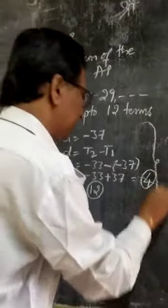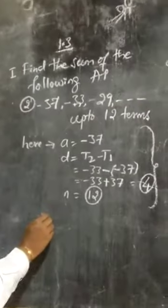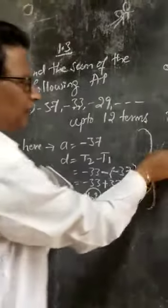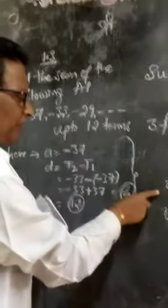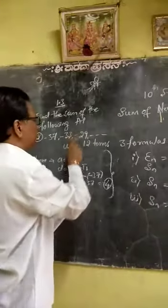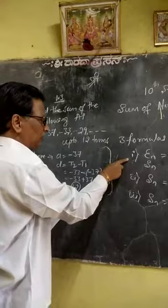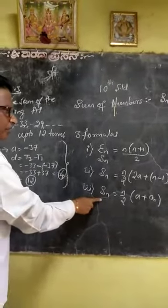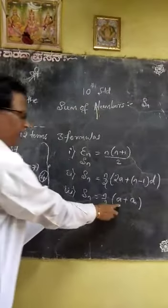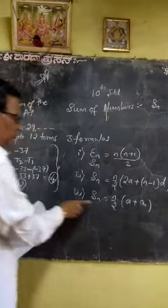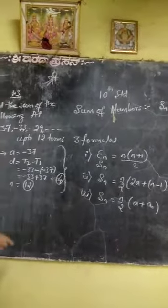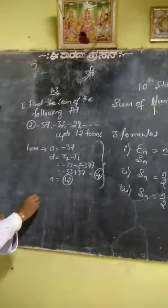So, substitute all these available values in the equation. Which formula is used better? The second formula is used better here. These are not natural numbers, so this one is not used. And the third formula is also not used because A and the last term is not given. So better the second formula is only used here.